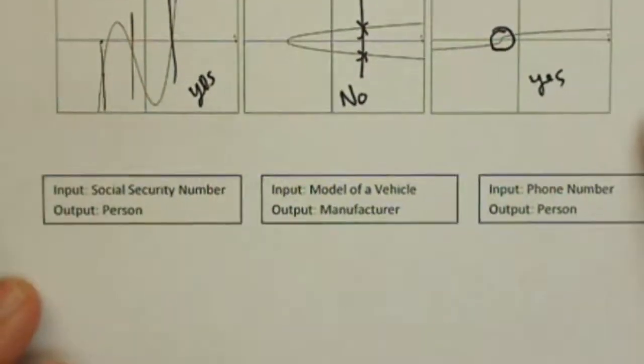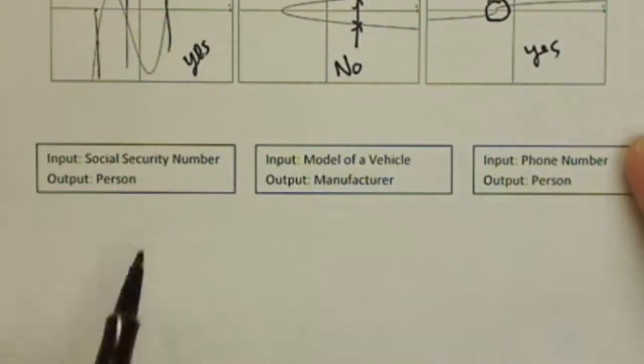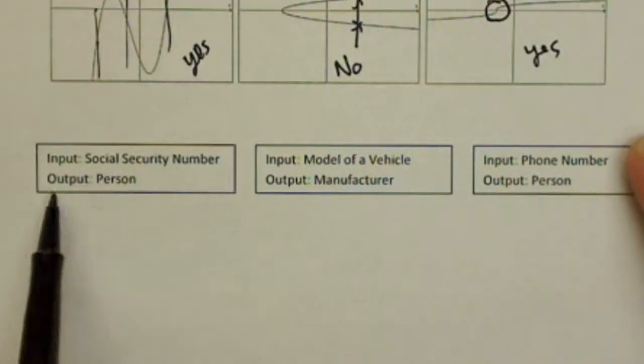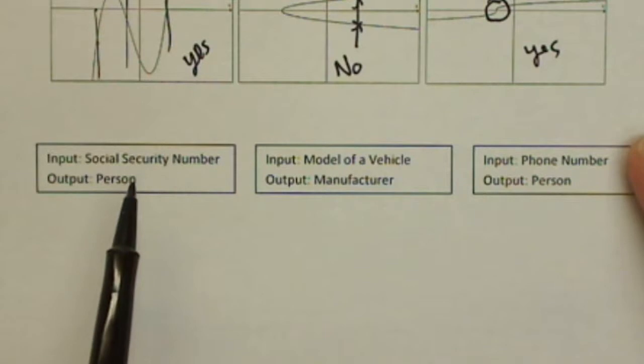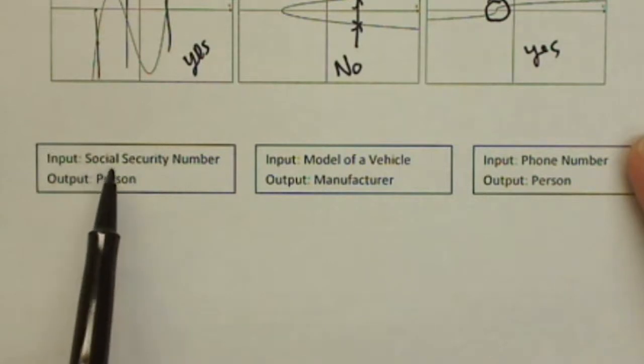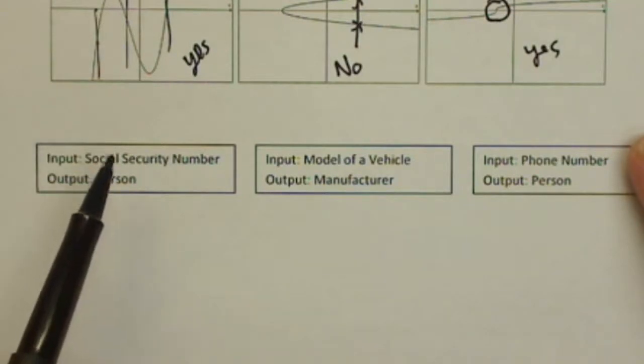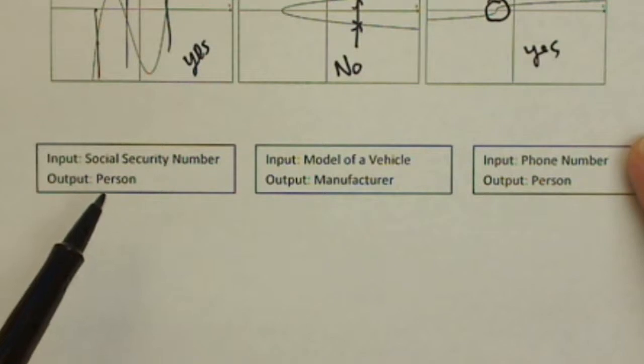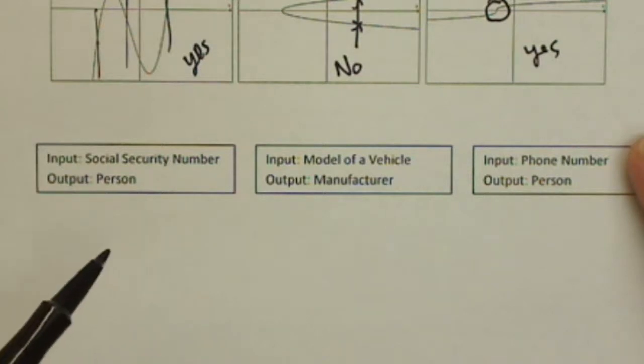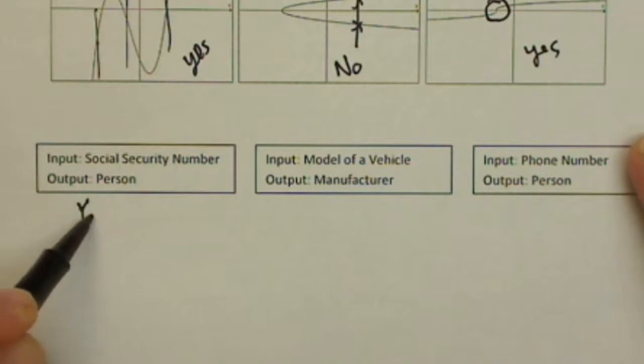Let's talk about a couple of situations. If the input is social security number and the output is person. Remember what you need to ask yourself. If you're given a social security number, do you definitely know the person? Well, if we were to input a social security number, we will get back one particular individual as nobody has two social security numbers. So, this would be yes, this is a function.